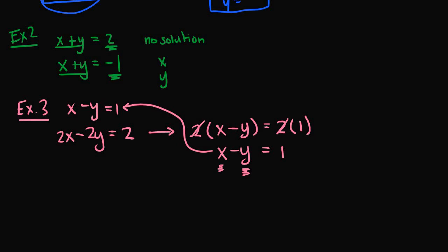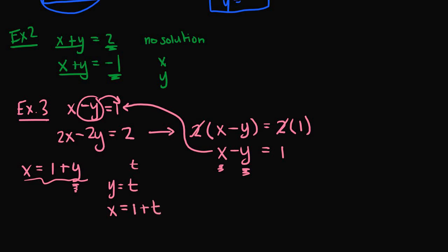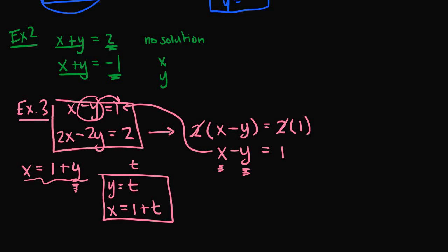Since there are infinite solutions, we represent the solution parametrically. Taking x minus y equals one and solving for x gives x equals one plus y. Letting the free variable y equal the parameter t, we get x equals one plus t and y equals t. We can verify by substituting into the second equation: 2(1 plus t) minus 2t equals 2, which simplifies to 2 plus 2t minus 2t equals 2, giving 2 equals 2 — which is true.